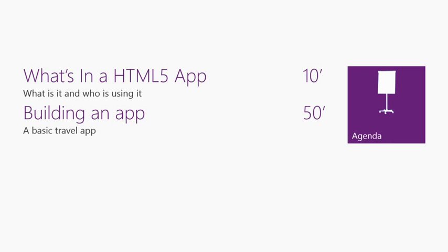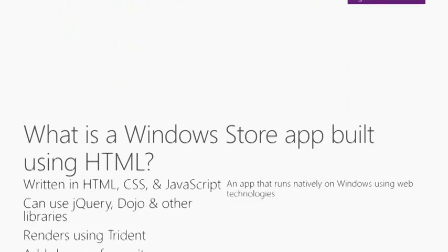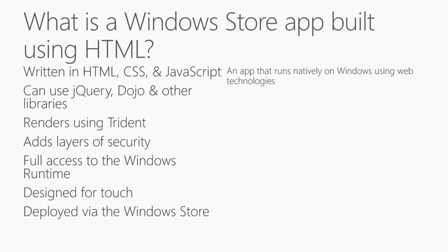I'm going to talk briefly about what is an HTML5 app in the context of Windows 8, and then for the next 15 minutes we're going to be building an application. A HTML and JavaScript application on Windows 8 is built using HTML, CSS, and JavaScript, but it runs natively on our platform.